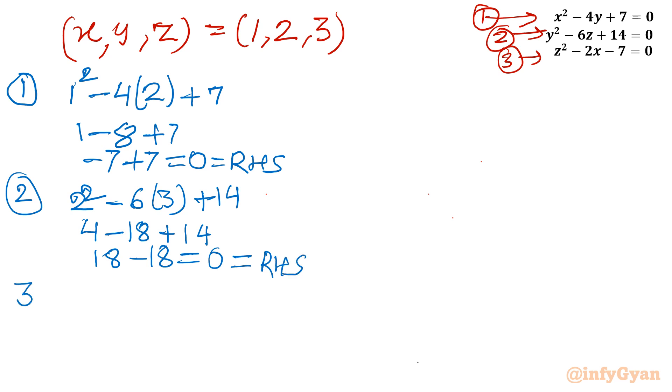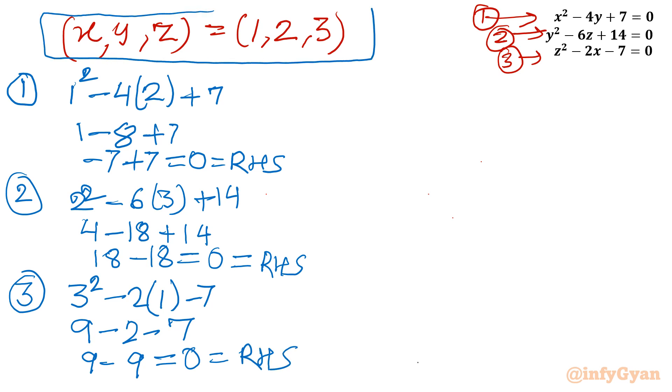Now come to equation number 3: z² - 2x - 7. So z² will be 3² minus 2 times 1 minus 7. 3² is 9, this will be minus 2 minus 7. So it is 9 - 9 equal to 0, equal to RHS. Hence this solution is verified. It is true for our given system of equations. And this will bring the end of this video.